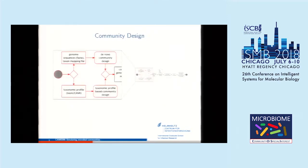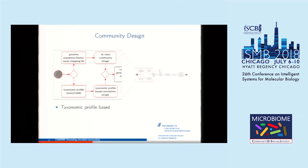The first step is actually the community design step — the stage where you decide how exactly you want your community you want to simulate to look like, whether you want to emulate a certain environment or use certain genomes you've sequenced. KamiSim has two different ways to design your community: the first is a taxonomic profile-based approach, and the second we call a de novo community design.